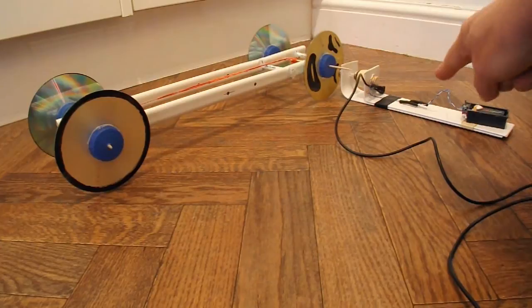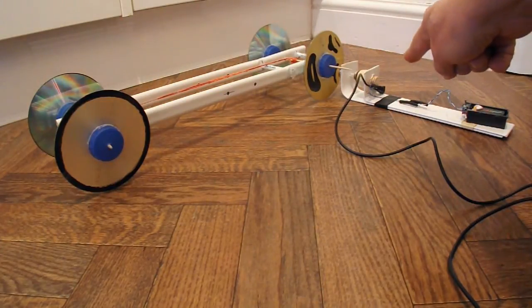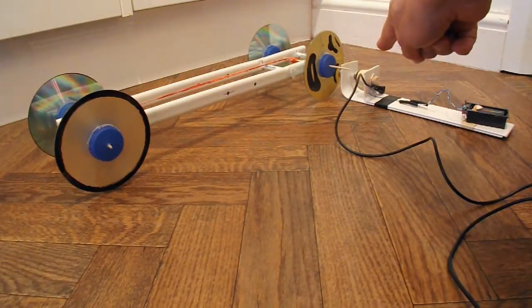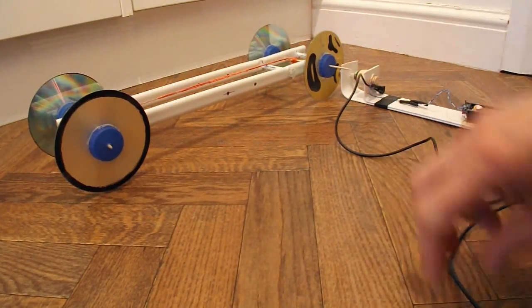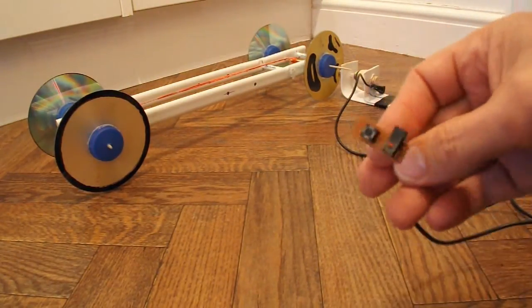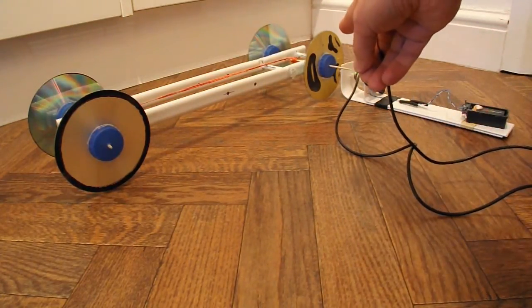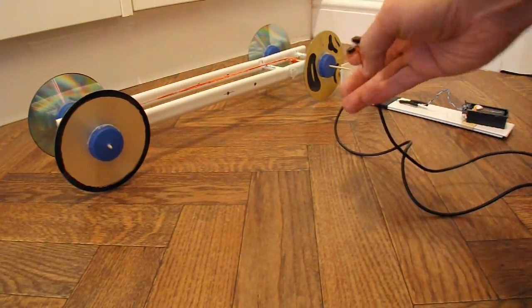But this is the simple one, this is a solenoid or an electromagnet that's operated by this little push switch. And that pulls a peg out of the back wheel and releases the car.